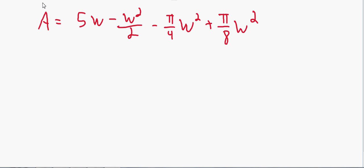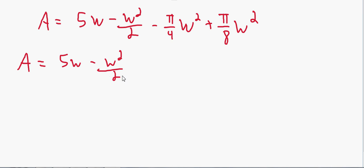We successfully eliminated the h variable. Combining the w² terms — (π/8)w² minus (π/4)w² is -(π/8)w², since π/4 = 2π/8 — our area function becomes: A(w) = 5w - w²/2 - (π/8)w².